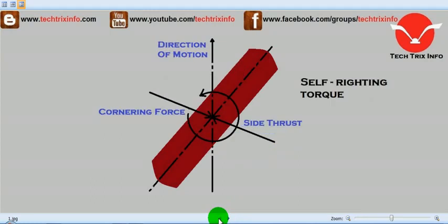But there is this particular tendency which actually brings back the wheels in the direction of motion. And this torque which is resulting, marked over here, this torque is called the self-righting torque.